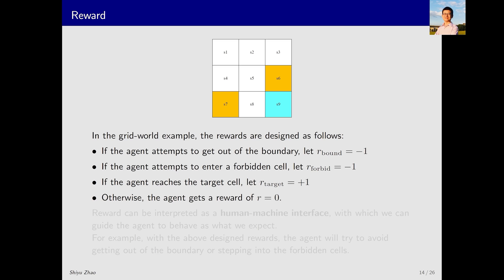In our grid world example, we design rewards as follows. If the agent attempts to escape the grid's boundaries, it receives a negative number, R_bound equals negative 1. If the agent enters a forbidden area, we set R_forbidden equals negative 1. However, when the agent reaches the target area, we encourage this achievement by setting R_target equals positive 1.